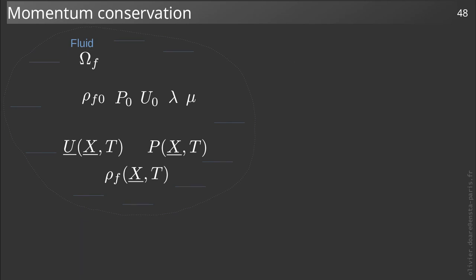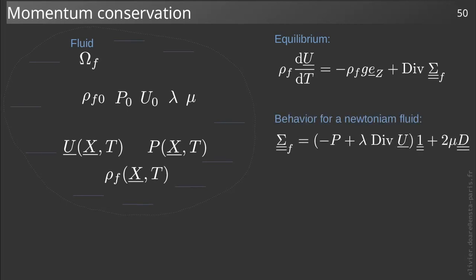To write the momentum conservation equation, we write a balance equation almost identical to the one we introduced for the solid. The only difference comes from the presence of a particle derivative instead of a partial derivative in the inertial term. This is due to the fact that we use a Eulerian description for the fluid attached to a volume, whereas the Lagrangian description is used for the solid attached to the matter of the medium.